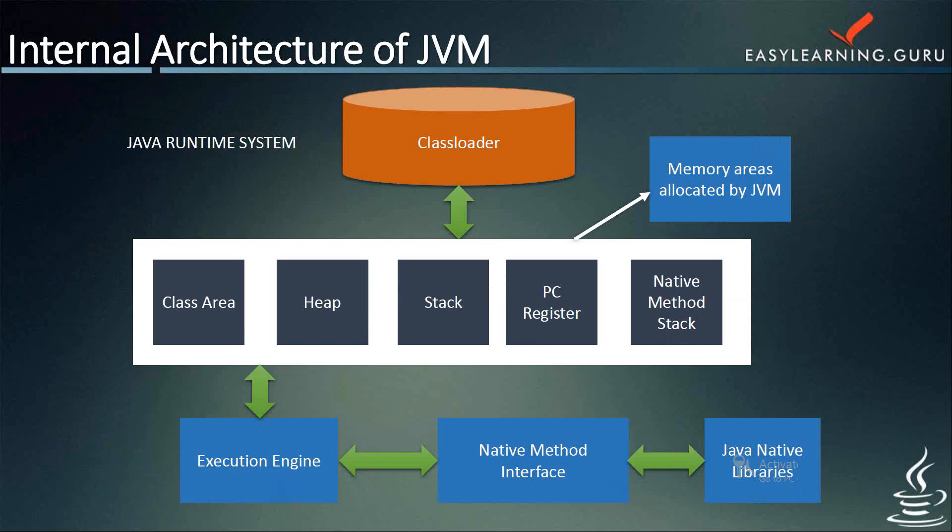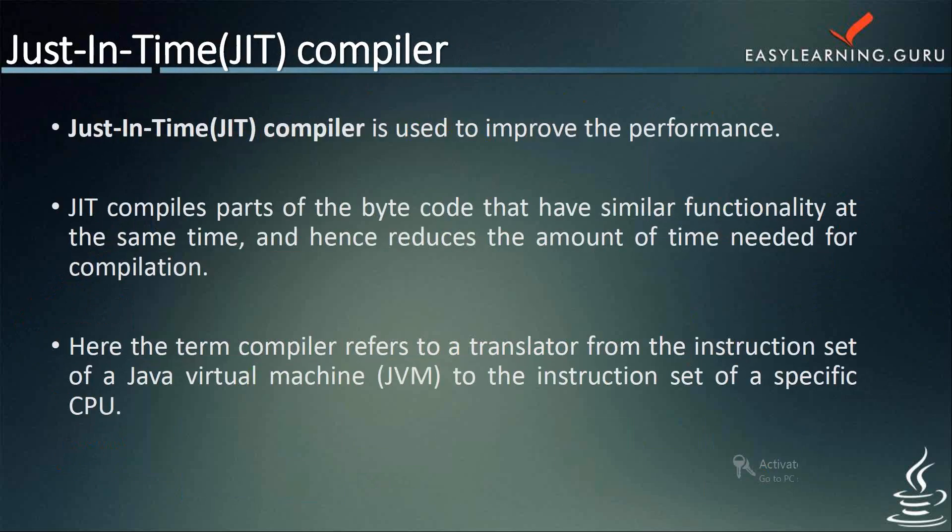The execution engine also includes a JIT compiler — that is, the Just-In-Time compiler. The JIT compiler is used to improve performance. It compiles parts of the bytecode that have similar functionality at the same time, hence reducing the amount of time needed for compilation. The term compiler here refers to a translator from the instruction set of a Java Virtual Machine to the instruction set of a specific CPU. The main difference between JIT and JVM is that JIT is a part of JVM itself and is used to improve the performance of the JVM. JVM is a virtual machine used in the Java programming platform to execute Java programs, and its main advantage is making Java platform independent by executing bytecodes.